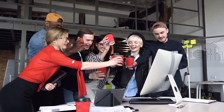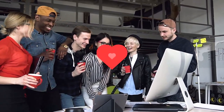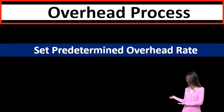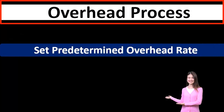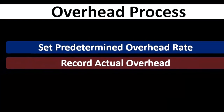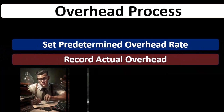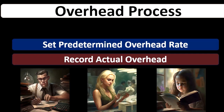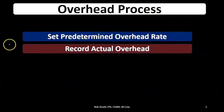First, let's take a look at the sequence of events related to overhead. Generally, at the start of the period or start of the month, we set up the predetermined overhead rate — the rate we will use to allocate overhead from the overhead bucket to individual jobs. Throughout the month, we record actual overhead: the things we cannot apply to a specific job in a job cost system, so we put them into overhead and apply them to jobs using an estimate — the predetermined overhead rate.